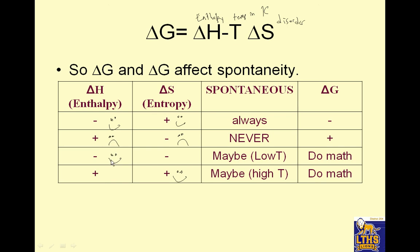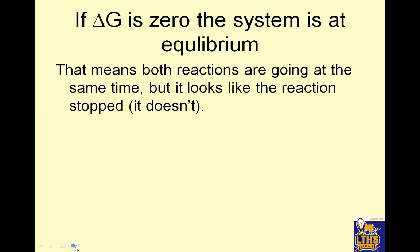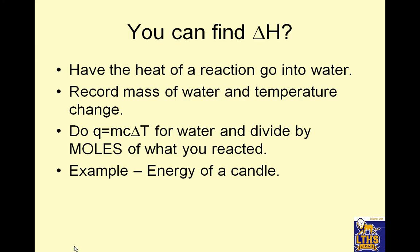If delta S is negative but delta H is negative, nature likes the enthalpy but not the entropy — it is only spontaneous at low temperature. If delta H is positive but delta S is positive, nature doesn't like the enthalpy but does like the entropy — it's only spontaneous at high temperatures. In both of those middle cases, you'd need to do the math to find out. If delta G is zero the system is at equilibrium, and both delta reactions are going at the same time even though it looks like the reaction stopped.